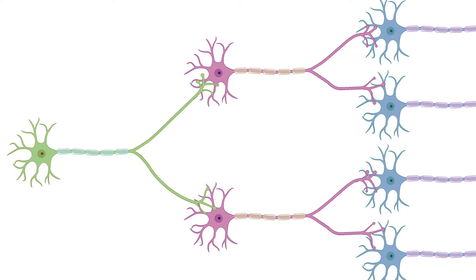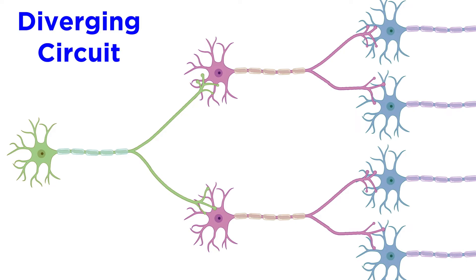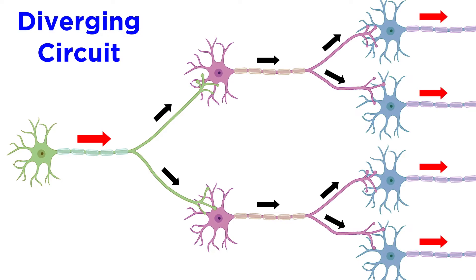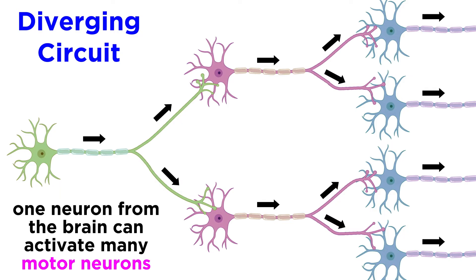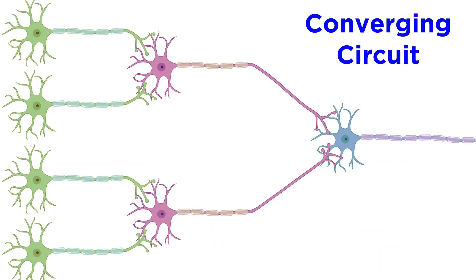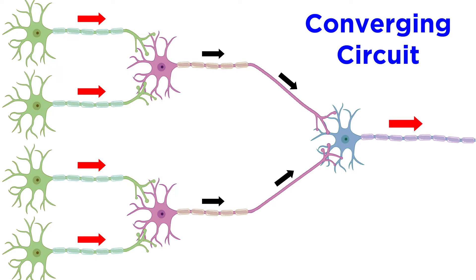Let's look at the types of circuits first. Here we see a diverging circuit — one input and many outputs, as the signal is amplified with each transmission. A single neuron in the brain can activate a huge number of motor neurons in this manner. We can also see a converging circuit, just the opposite of a diverging circuit: multiple inputs and just one output, so the signal becomes concentrated.